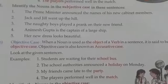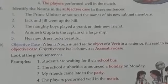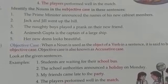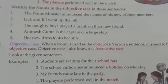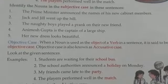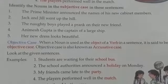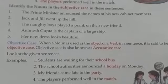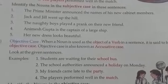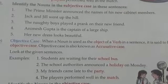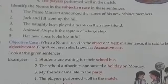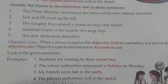Here are some examples. 'Students are waiting for their school bus.' The word 'school bus' here is a noun in the objective case form. 'The school authorities announced a holiday on Monday.' Here, 'the school authorities' is a noun in the subjective case, 'announced' is the verb, and 'a holiday' is the object.